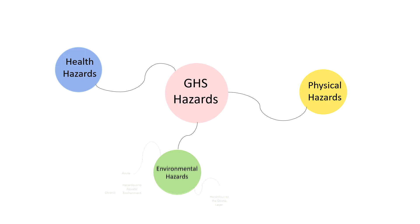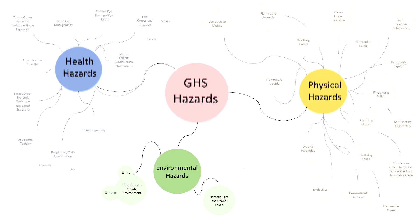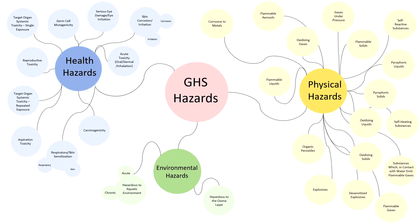Each group is subdivided into classes. There are two environmental hazard classes, one of which, hazardous to aquatic environment, has subclasses based on exposure duration. There are 10 health hazard classes and 17 physical hazard classes. There is one chemical hazard, corrosive, that is both a health hazard and a physical hazard.